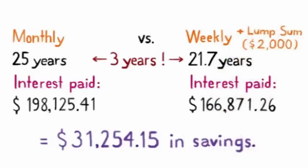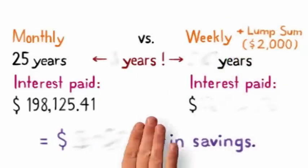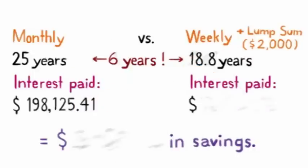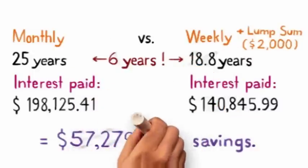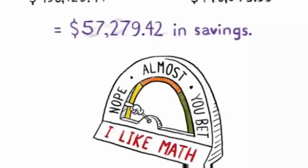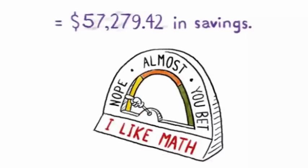Let's say you paid an extra $2,000 every year. You would shave off a combined total of over six years from your 25-year mortgage and save a total of over $57,000 in interest. It's almost enough to make you start liking math.